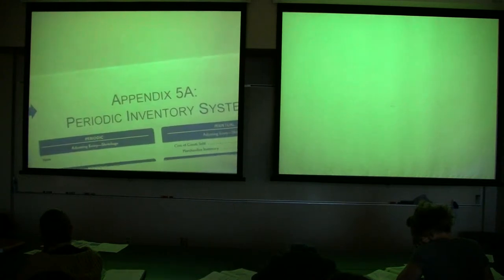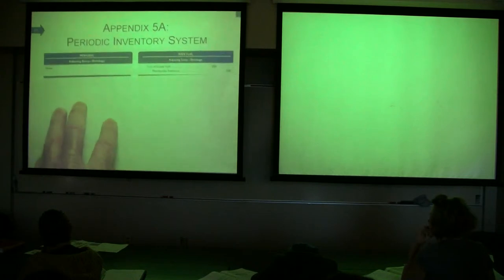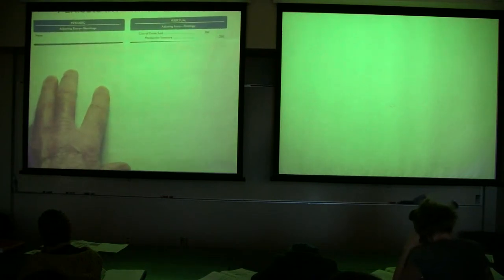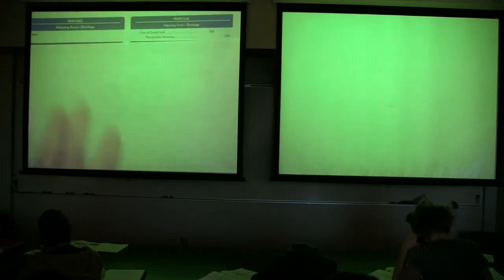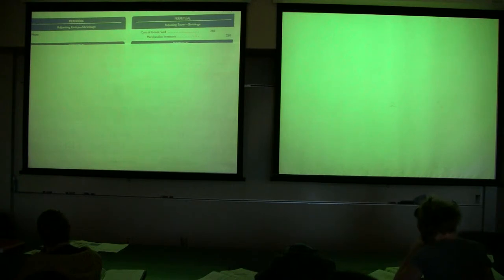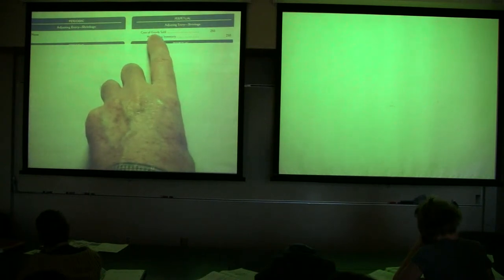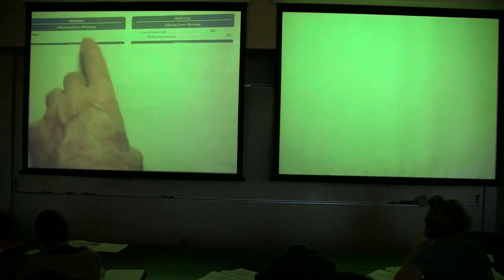Under the perpetual system, when you have shrinkage — say $250 worth of merchandise disappeared — that shrinkage converts the asset. What you do is transfer the asset to the expense where it's incurred. There's no such adjustment in the periodic.